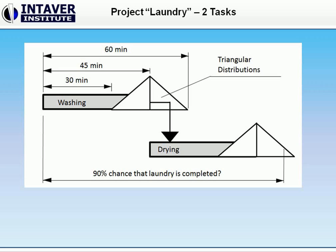Here is an example of a simple project schedule. Let's assume that you want to do the laundry. The question is: how long would it take to fully complete the two operations? You have a project schedule with only two tasks: washing the laundry in the washing machine, and drying the laundry in the dryer. The washing machine and the dryer have sensors that will automatically shut off the machine when the laundry is ready.